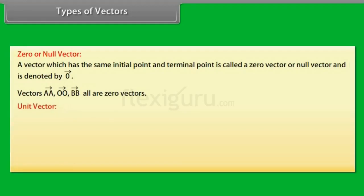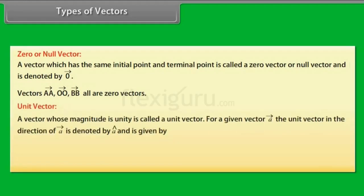Unit Vector: A vector whose magnitude is unity is called a unit vector. For a given vector A, the unit vector in the direction of A is denoted by cap A and is given by cap A equals vector A by mode of vector A.